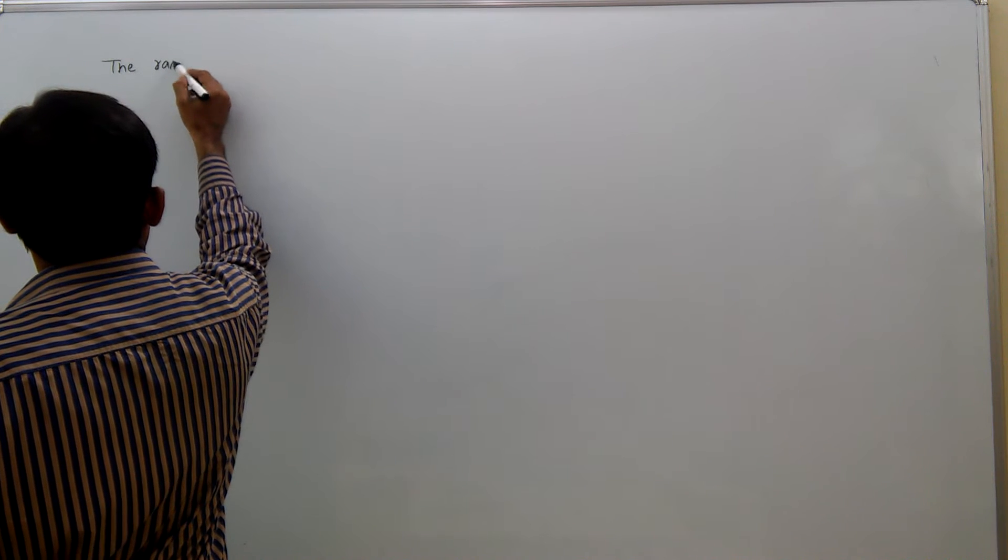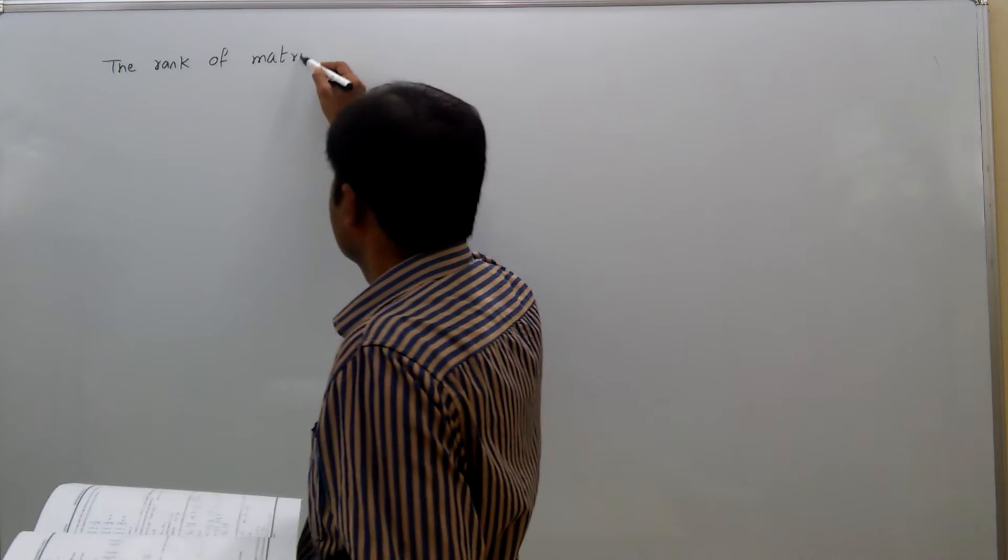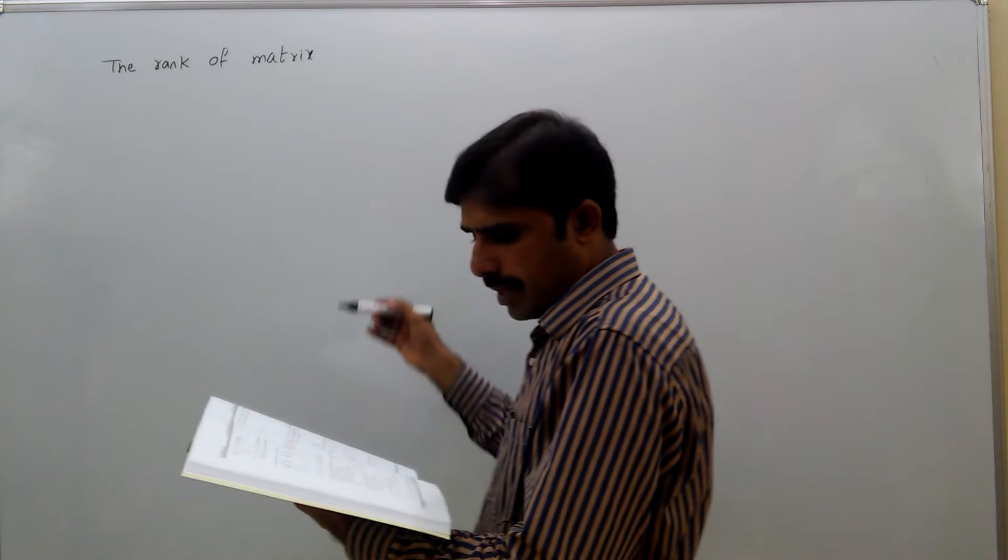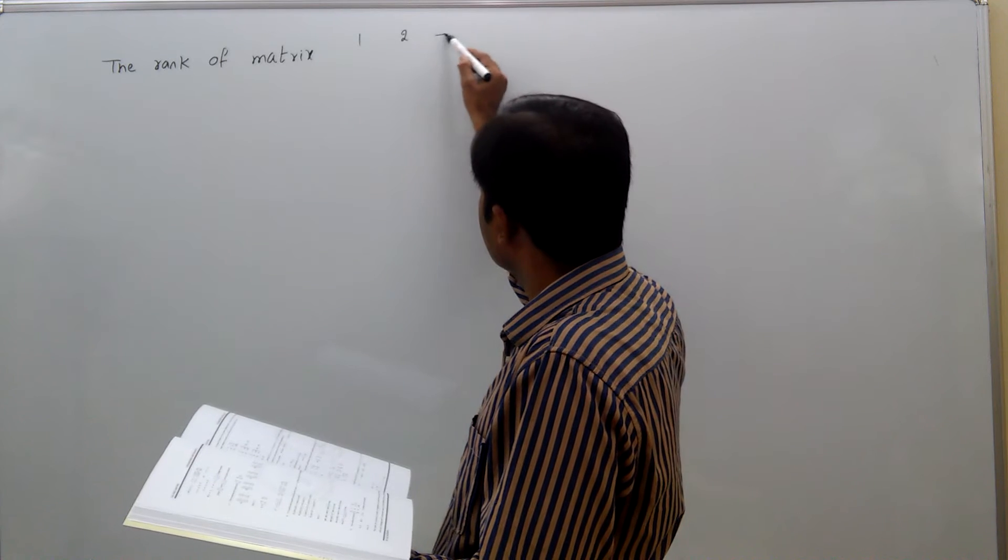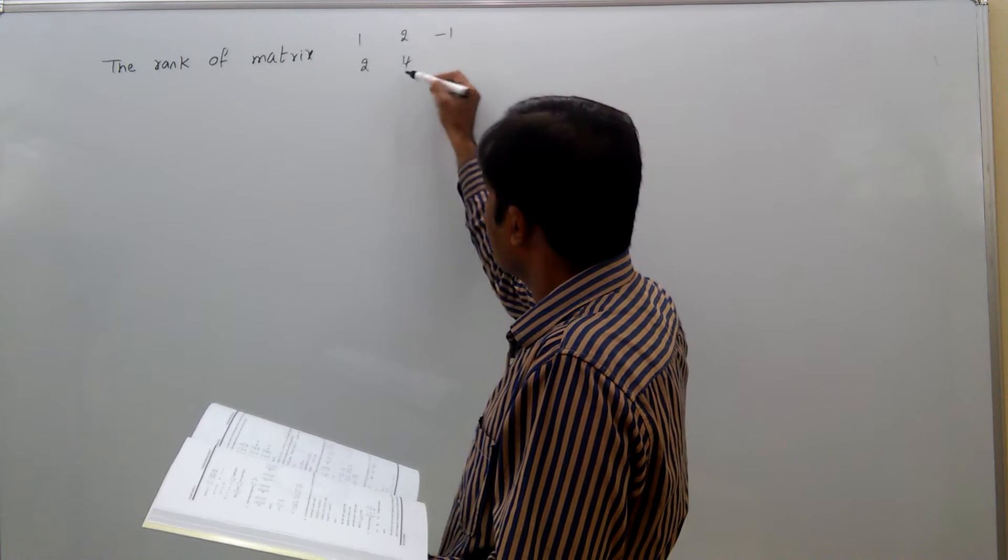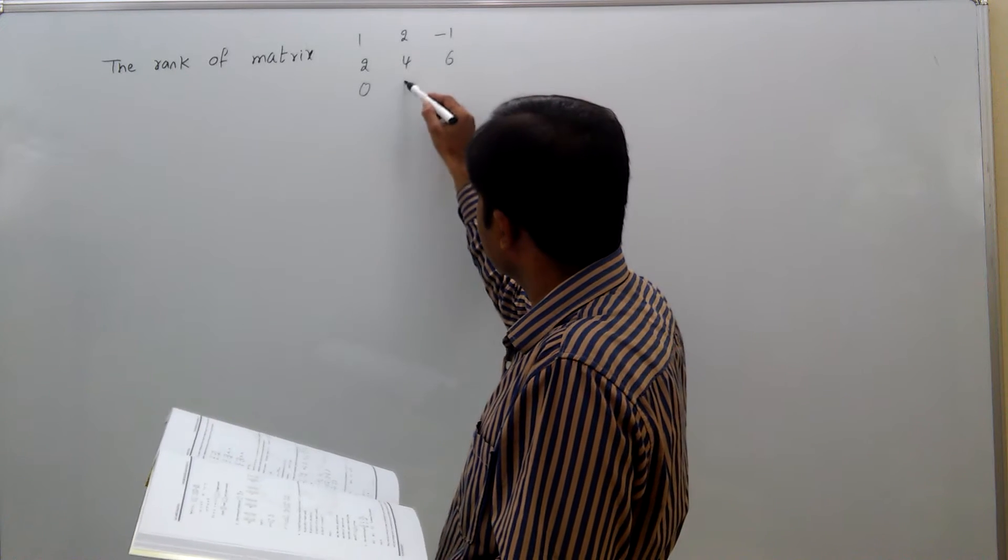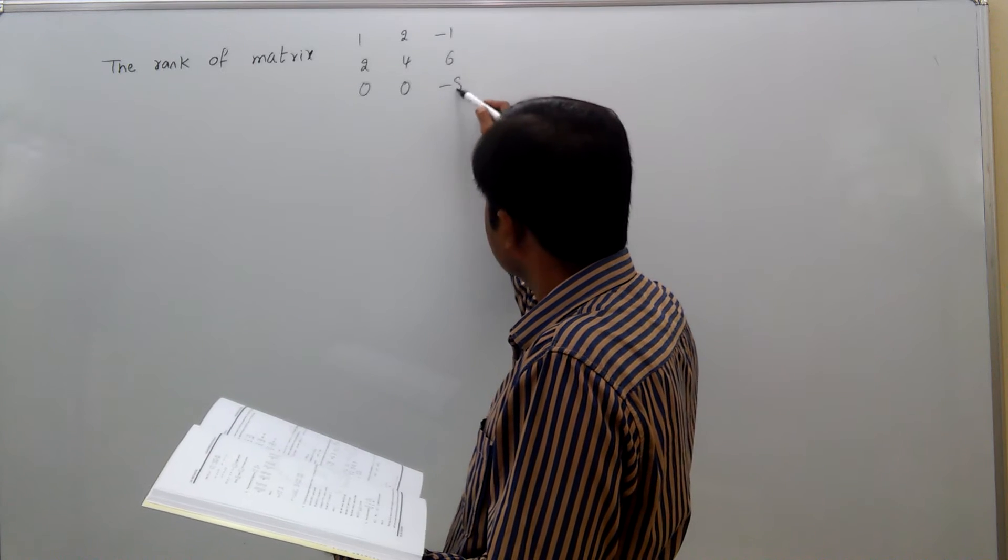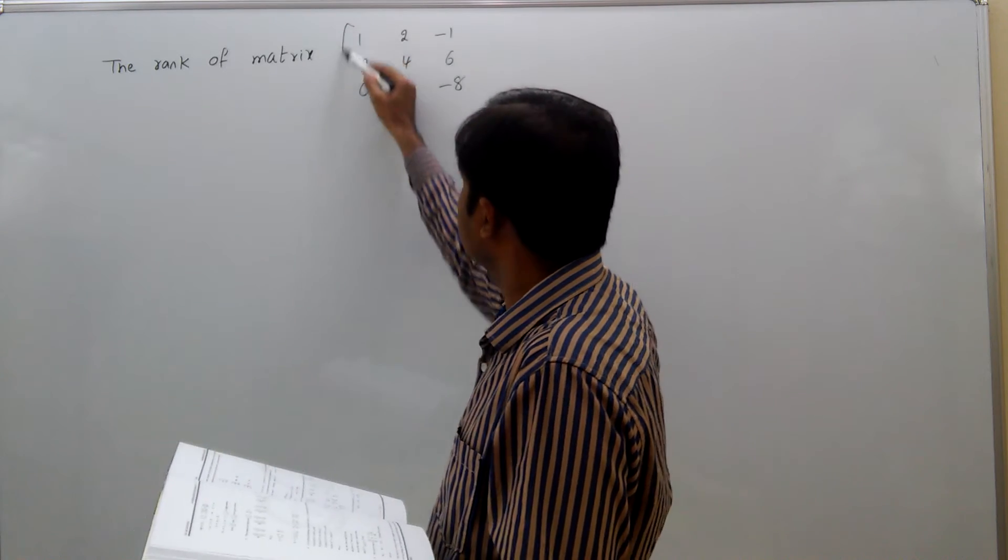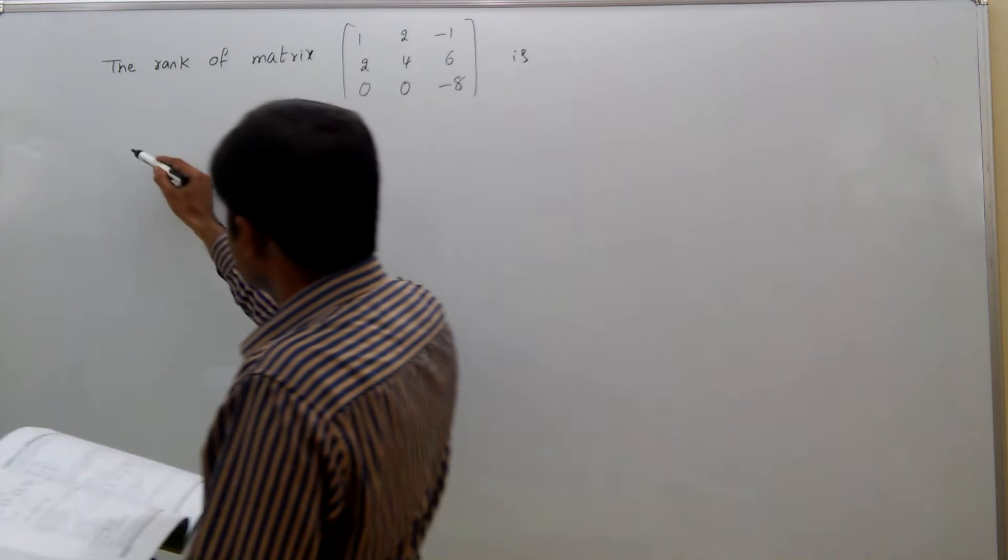The rank of matrix [1, 2, -1; 2, 4, 6; 0, 0, -8] is option A, 1, 2, minus 1, 2, 4, 6, 0, 0, minus 8.